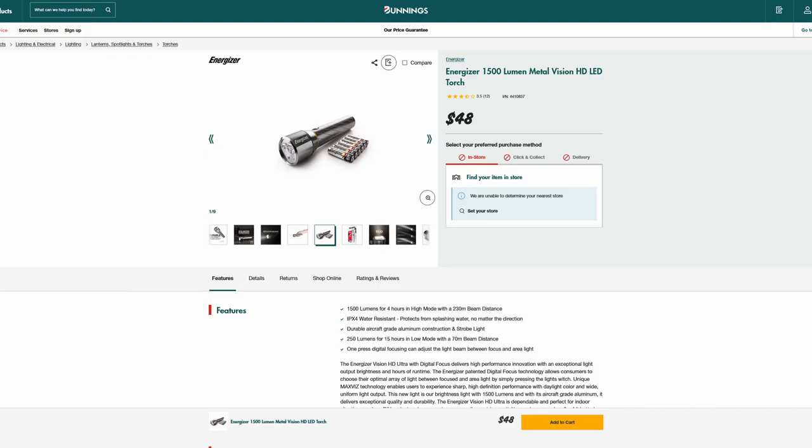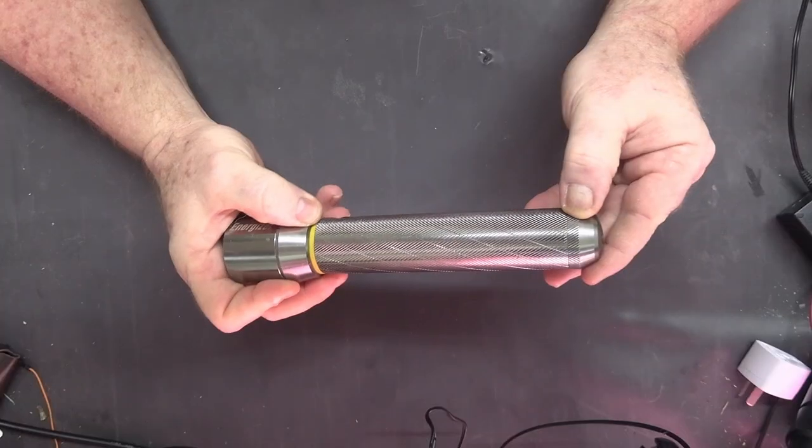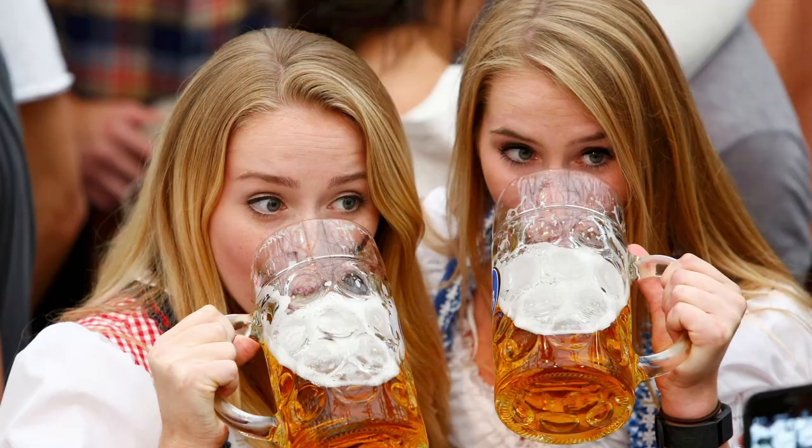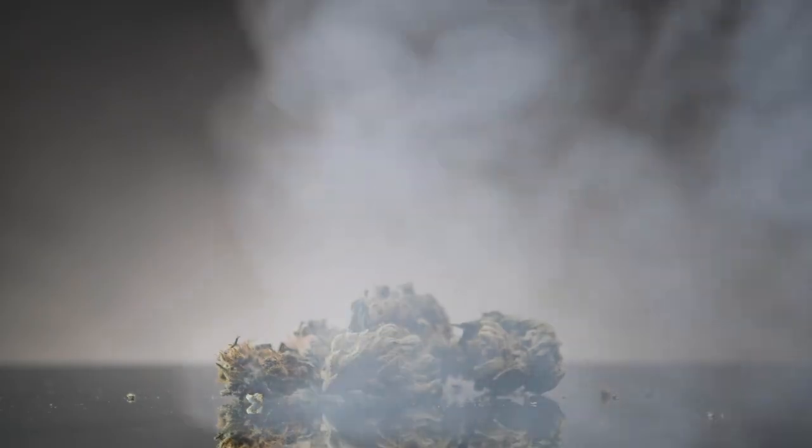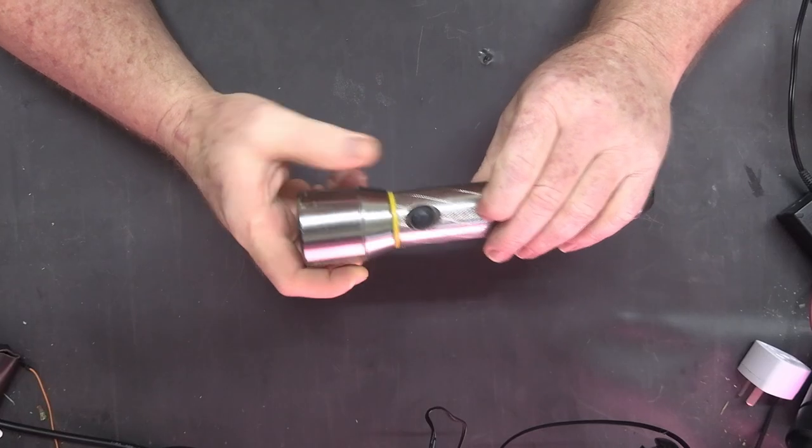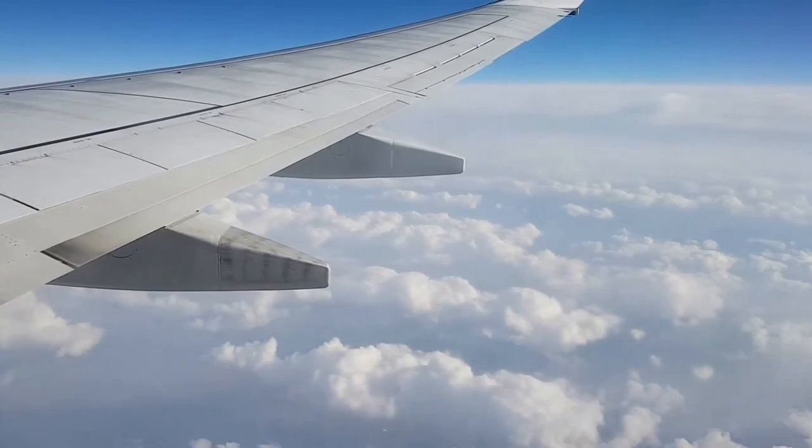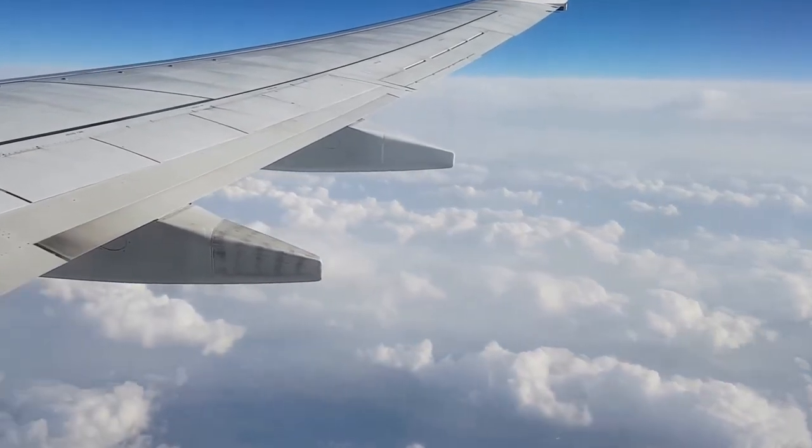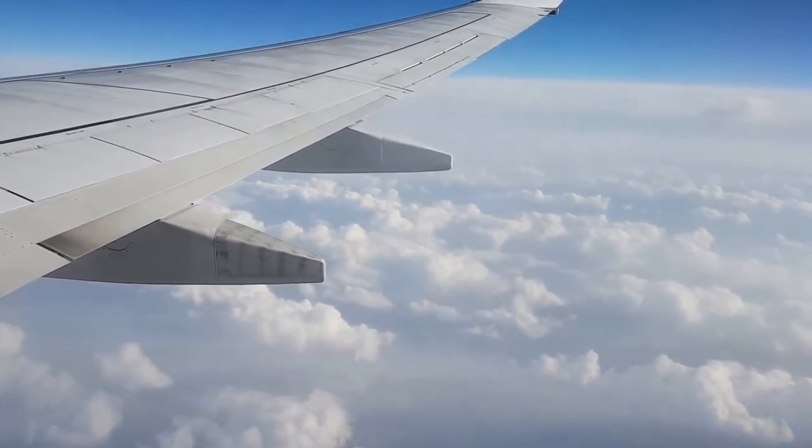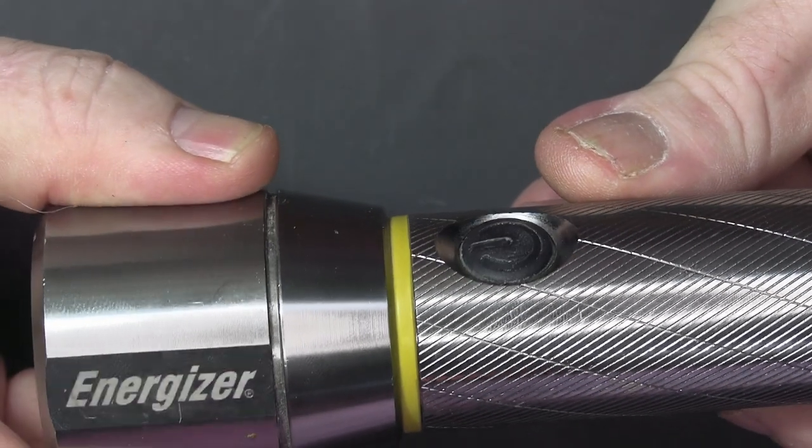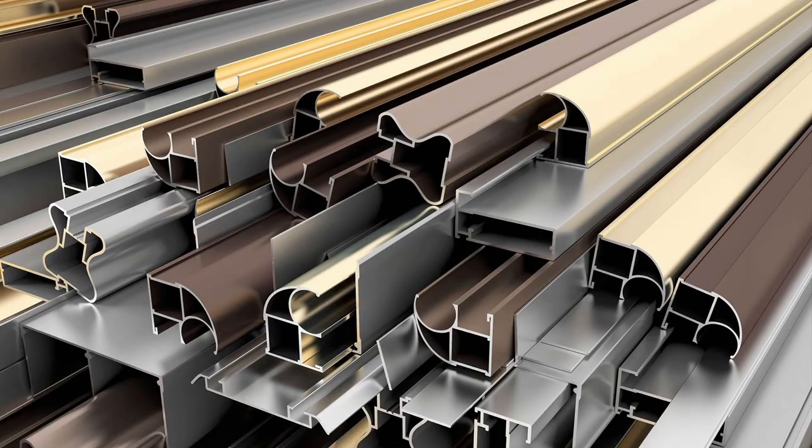The Energizer 1500 assaulted Bunnings warehouse for a substantial 48 buckaroos. That's like 48 cheeseburgers in all money or a slab of beer or three grams of hij. The Energizer 1500's claim to fame is its alleged 1500 lumen output and aircraft grade aluminum. Wow, that certainly does sound fancy. You know what aircraft grade aluminum is, don't you? Aluminum.